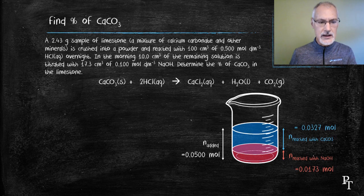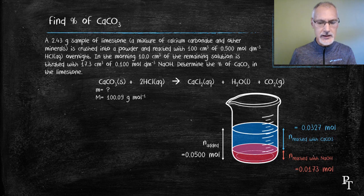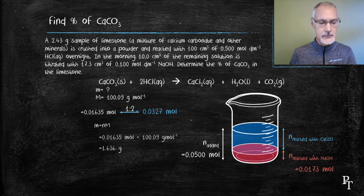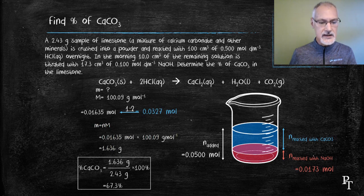Back to my original equation, I want to determine the mass of calcium carbonate. Remember, all I know is it's less than 2.43 grams and I know the molar mass of calcium carbonate. I now know the moles of HCl that reacted with it. Employing the 2-to-1 ratio that exists here, I can determine the moles of calcium carbonate. With knowledge of moles and molar mass, I can calculate the mass of calcium carbonate — I'm carrying one more significant digit than required because I'm not quite at the end. I'll then take this mass and divide it by the original mass of the sample to give me the percentage of calcium carbonate in the original sample.